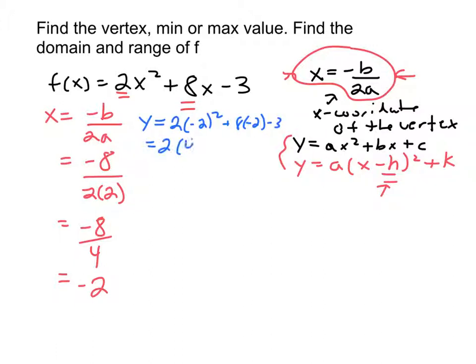So negative 2 squared is 4 plus, well, actually not plus because it would be minus at that point. 8 times negative 2 is minus 16 minus 3. So this would be 8 minus 16 minus 3.